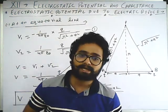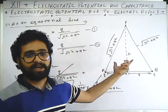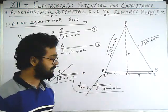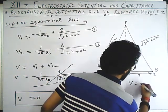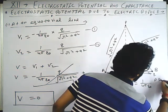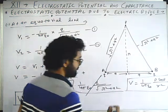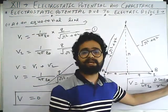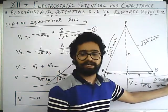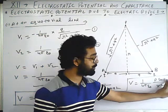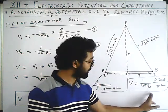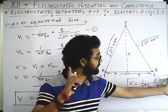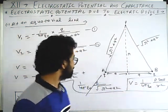Now I am going to discuss the electrostatic potential due to electric dipole at any point. This formula can be applied anywhere, at any point. The formula is V equals one upon four pi epsilon naught into P cos theta upon R squared. For the axial line, theta equals 0 degrees, so cos 0 equals 1, giving V equals one upon four pi epsilon naught, P upon R squared. For the equatorial line, theta equals 90 degrees, cos 90 equals 0, so V equals 0.